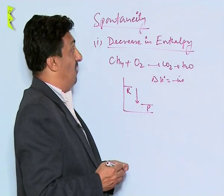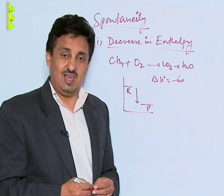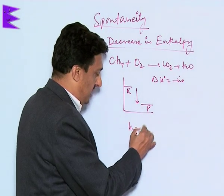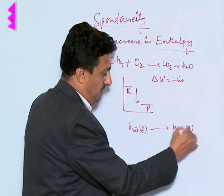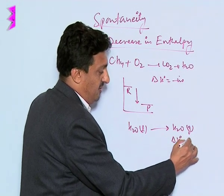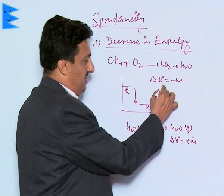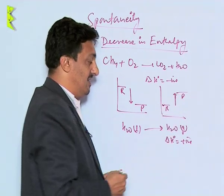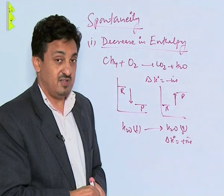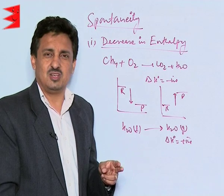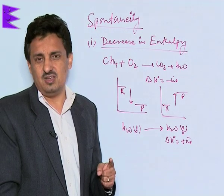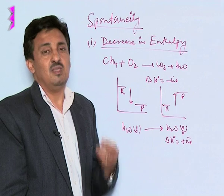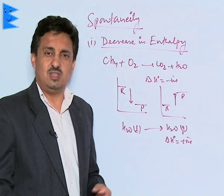We initially thought this was the criteria for determining spontaneity, but then we realized it is not the only criteria. We got examples like water liquid being converted into water vapors, where the enthalpy of reaction is positive — meaning the energy of the system is getting increased — but still this process is spontaneous. So the decrease in enthalpy is not the sole criteria on which spontaneity depends. There are other factors which also govern the spontaneity of a reaction.